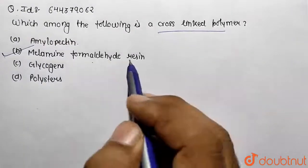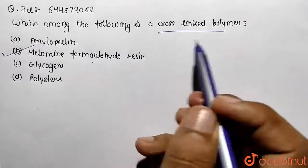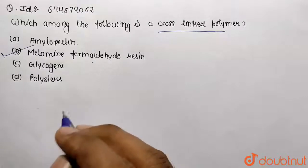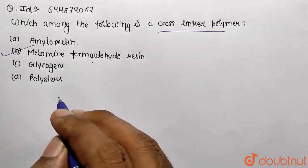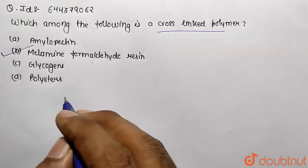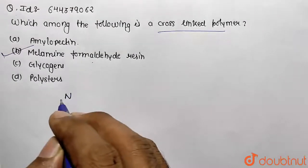Melamine formaldehyde resin is going to contain the cross-linked polymers. So let me draw the structure for this. For that we are going to take the monomeric unit of melamine and formaldehyde. So melamine is going to have NH2.